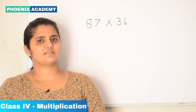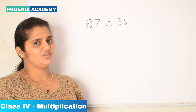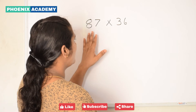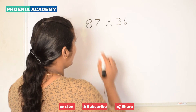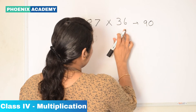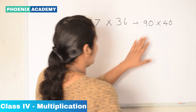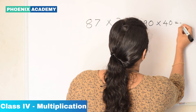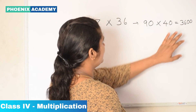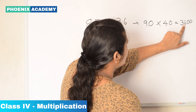Estimating the products: 87 into 36. We can estimate the products in two ways. First way: round off 87 to 90 and 36 to 40. Then multiply 9 times 4 is 36, and add two zeros. So the estimated product of 87 and 36 is 3,600.